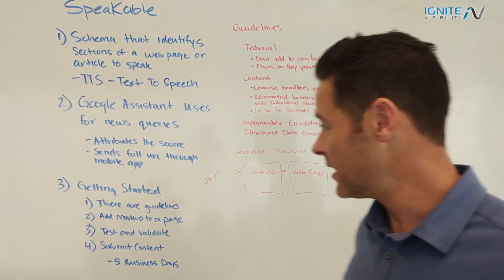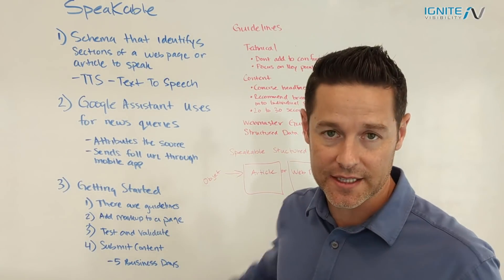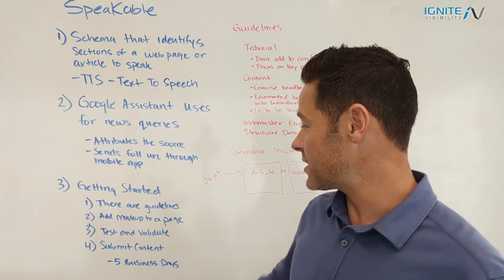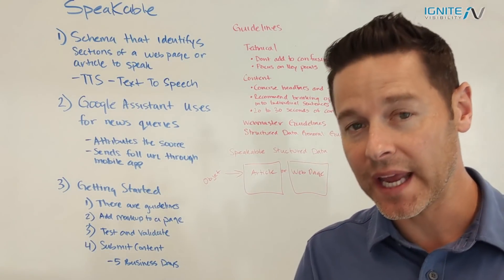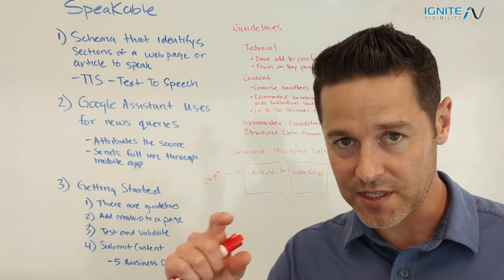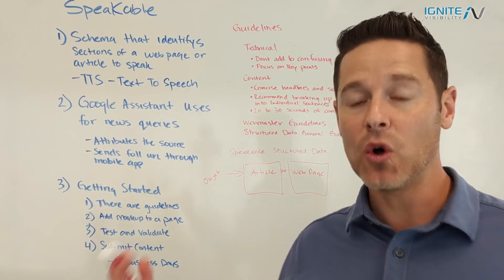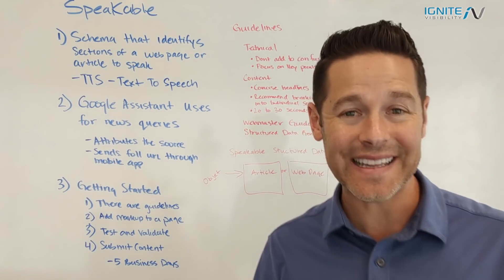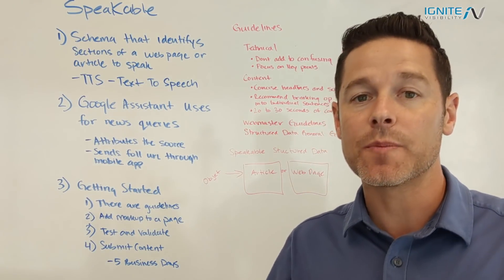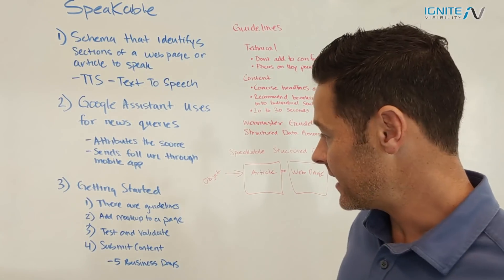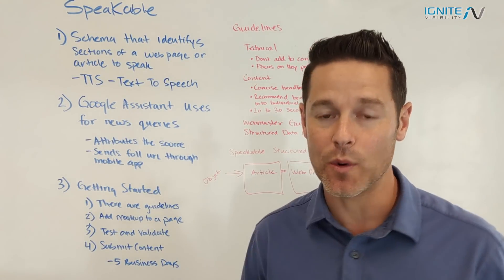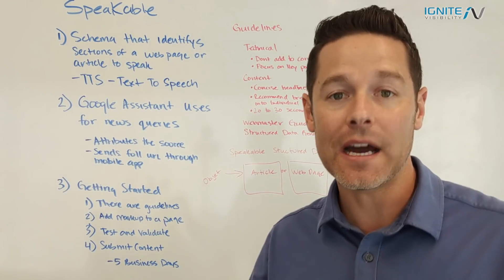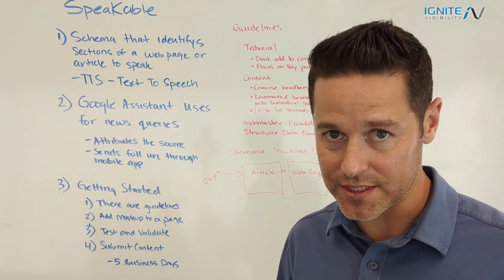What do you need to do to get started? First, you need to understand that there are guidelines you need to follow. You need to make sure that you add markup to a specific part of a page — you can't add it to the whole page. Then you need to test and validate it to make sure that Google is picking it up properly and that everything's marked up right. Finally, when you submit your content, you need to wait five business days to see whether or not Google is actually going to allow that content to be shown inside of the Google Assistant.